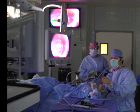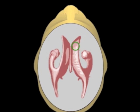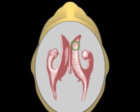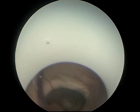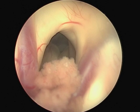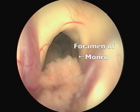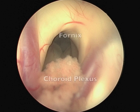The patient was brought to the operating room and positioned supine with the head in a Mayfield. A burr hole was performed on the right frontal area and the endoscope was advanced inside the right lateral ventricle. The ventricle was observed, and the fornix, choroid plexus, septal vein, and thalamostriate vein were identified.